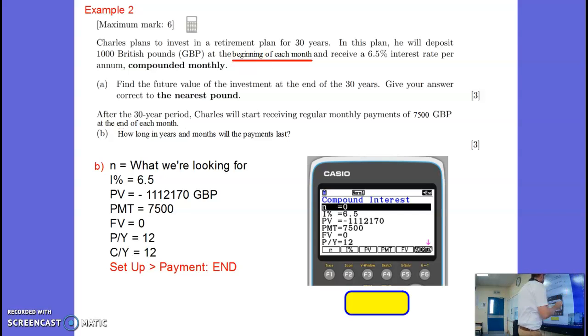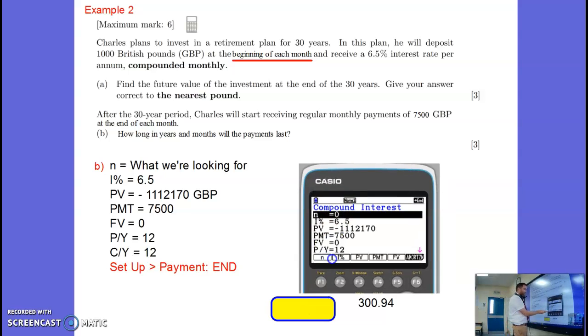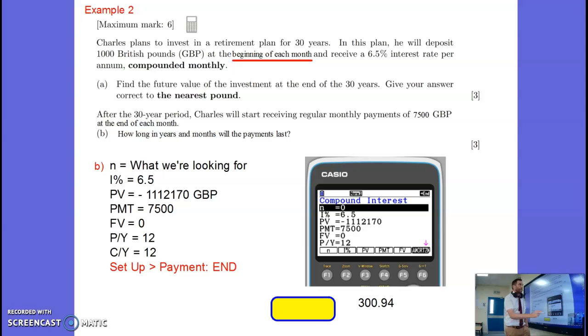Let's have a look what happens when I put all that information in. I come out with an answer of 300.94 for N. So I've pressed F1 to calculate N there. You can see all these buttons down here calculate the different things. So calculating N, press F1, and the answer was 300.94.